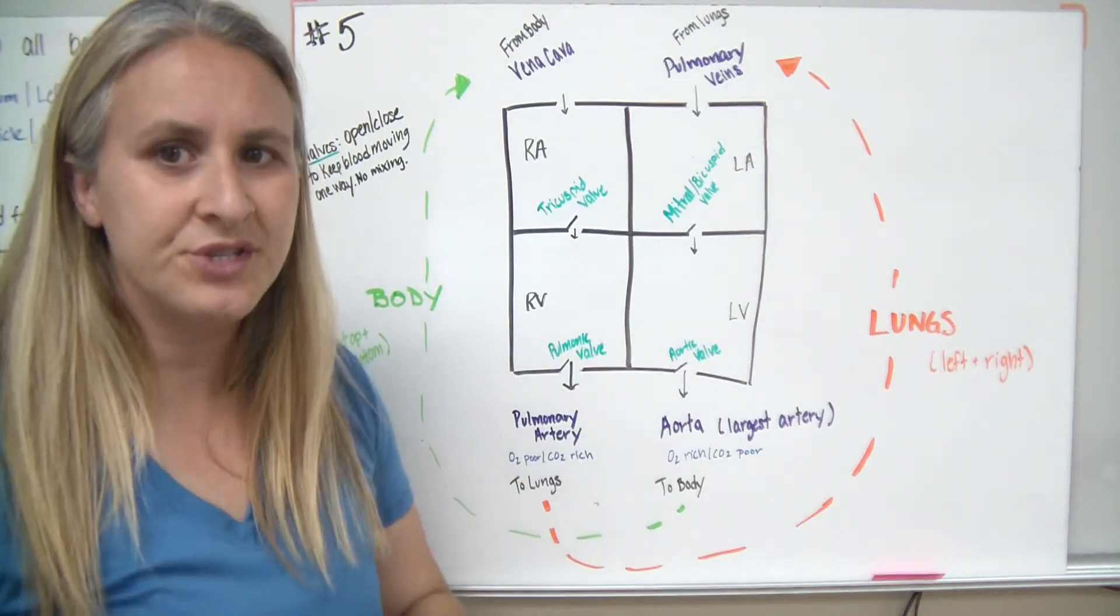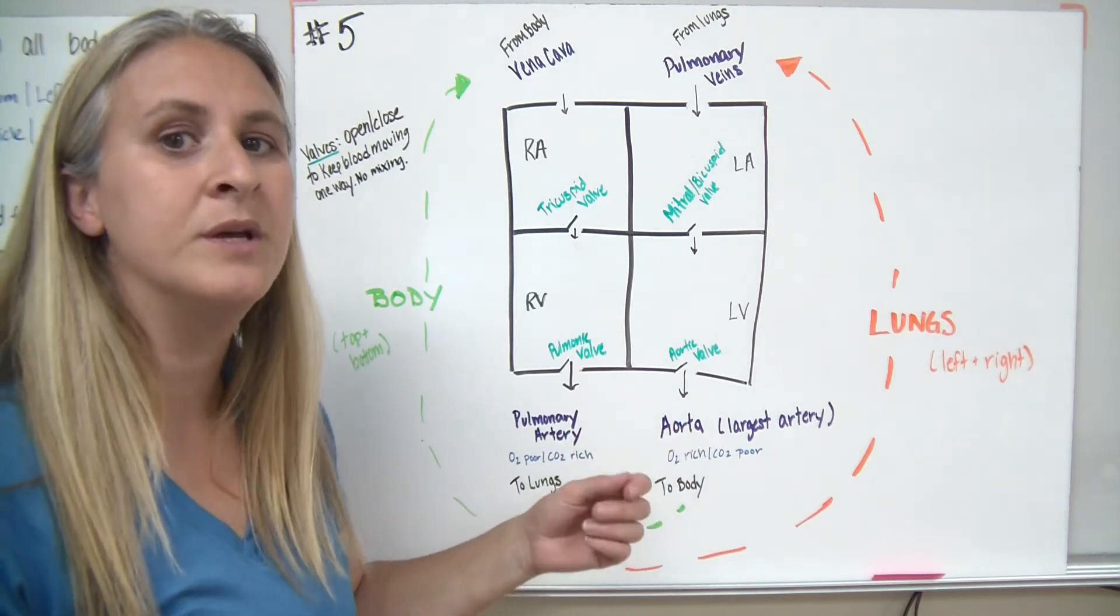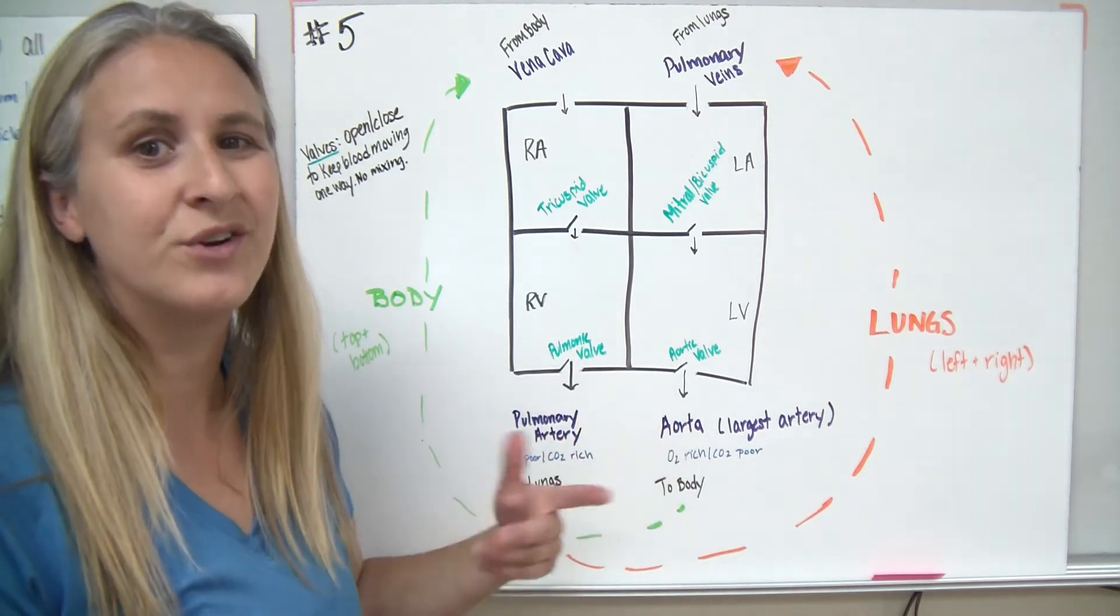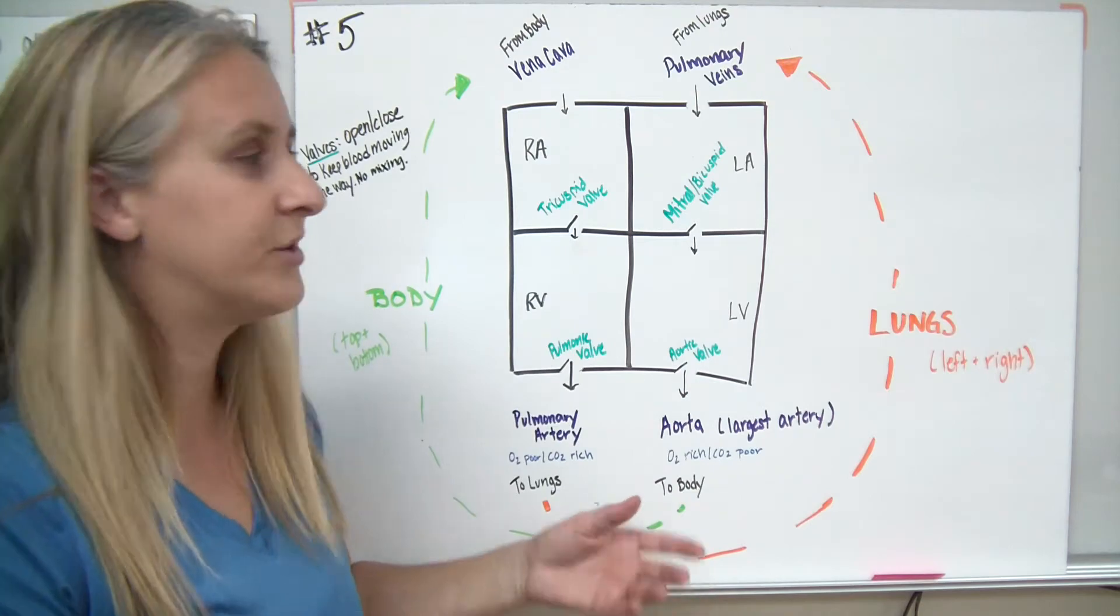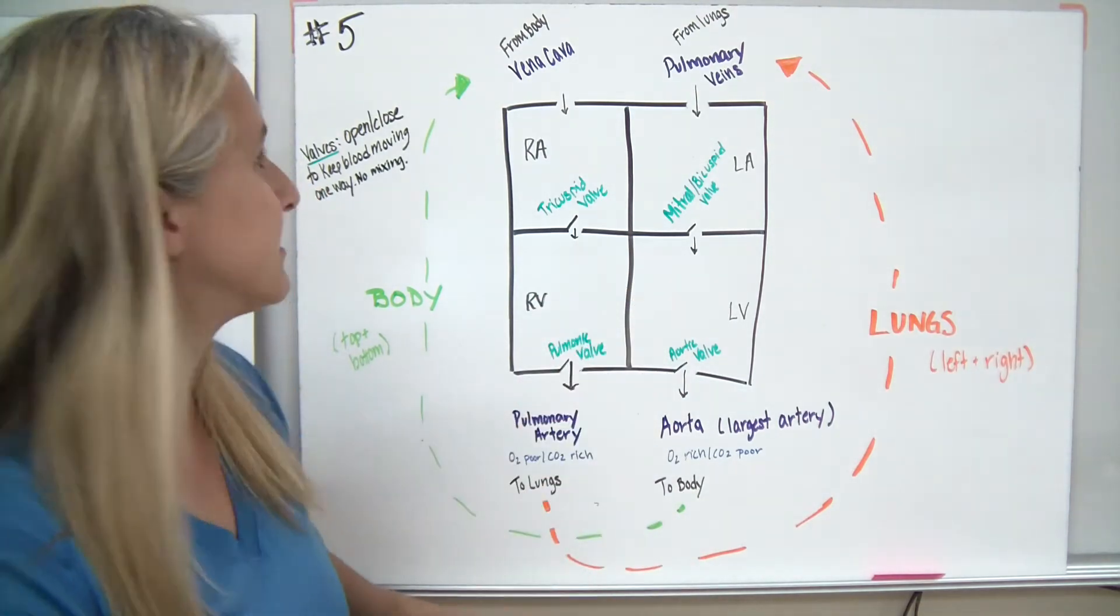So what we're going to do is we're just going to practice some of the labeling. Remember, this again is a very simplified diagram. When we work on this in class, we're going to look at a real heart and see what things look like. But for now, a simplified diagram just helps you to get the logistics of things together.